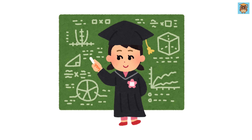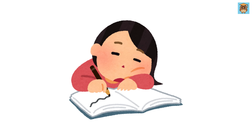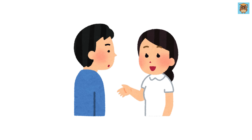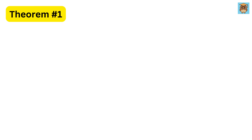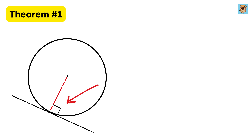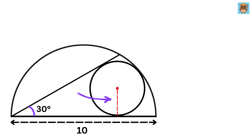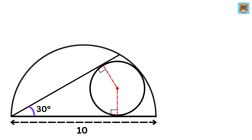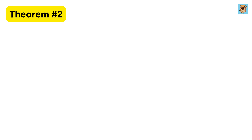This problem uses multiple theorems you might have never heard of, and I will walk you through each step by step. The first theorem is the theorem of tangent and radius. A tangent is a straight line that touches the circle at exactly one point without crossing it. The important property is that a tangent is always perpendicular to the radius at the point of contact. So if we draw the radius to the tangent line or the diameter of the semicircle, this angle will be 90 degrees. Similarly, if we draw the radius to this line, that angle will also be 90 degrees. Let us label the radius of this circle as r.